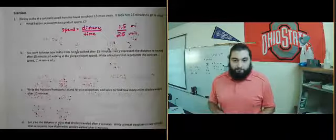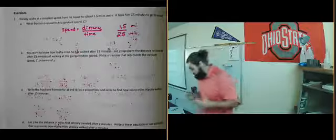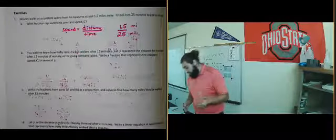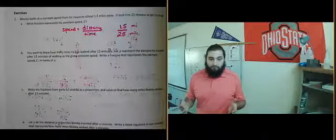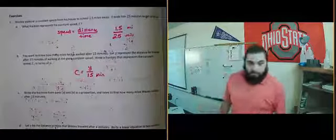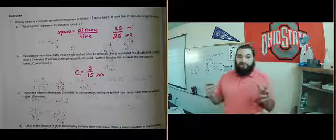That fraction represents his constant speed. 1.5 divided by 25. So you want to know how many miles he's walked after 15 minutes. So y is going to represent the distance he traveled after 15 minutes at the constant speed. And so what they want you to do is give a fraction with the constant speed in terms of y. So what we don't know is how far he's gone. That's going to be our y. We want to figure out how far that is with a time amount of 15 minutes. So we want to find y divided essentially by 15 is going to be equal to c.